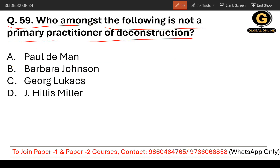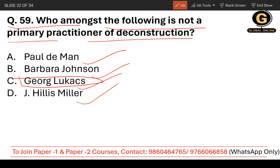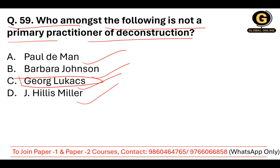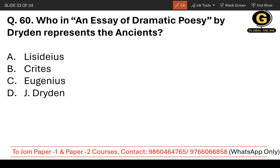Question number 59: Who among the following is not a primary practitioner of deconstruction? When it comes to deconstruction, Jacques Derrida is the prominent figure. The options are Paul de Man, Barbara Johnson, George Lukács, and J. Hillis Miller. The correct answer is George Lukács, because Lukács was associated with other theoretical frameworks, not deconstruction.